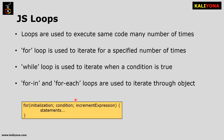This is the for loop syntax. Write the 'for' keyword, then inside brackets write initialization, condition, and increment expression. Then inside flower braces write the statements. Those statements will execute inside the for loop.